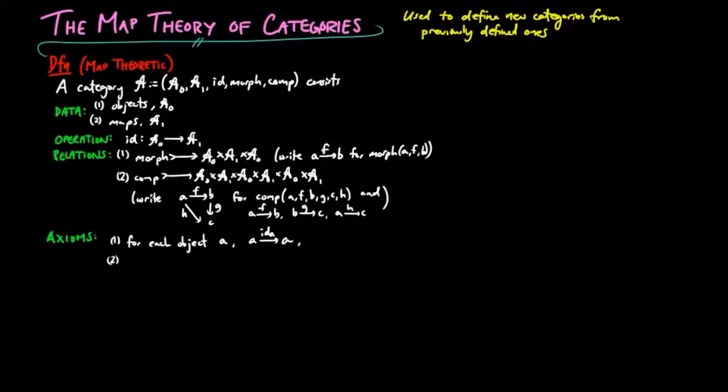Axiom 2: For each objects A and B and map F, if F is a morphism from A to B, then the following are commutative triangles.